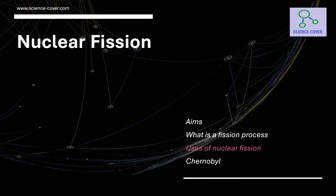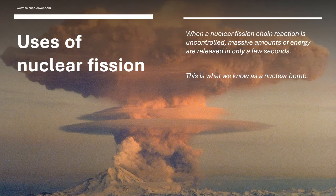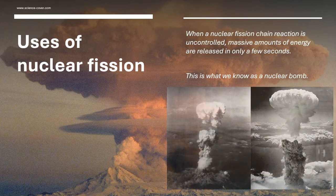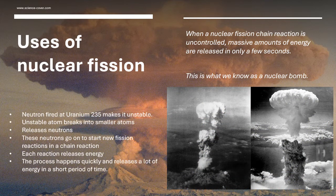Now let's look at the uses of nuclear fission. When a nuclear fission chain reaction is uncontrolled, a massive amount of energy is released in only a few seconds — this is what we call a nuclear bomb. A neutron is fired at uranium-235 making it unstable, the unstable atom breaks into smaller atoms releasing neutrons, and these neutrons go on to start new fission reactions in neighbouring uranium atoms, creating a chain reaction that releases lots of energy in a short space of time.